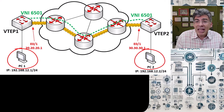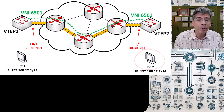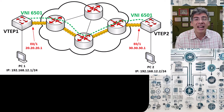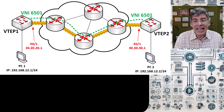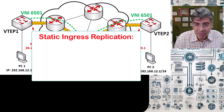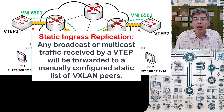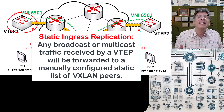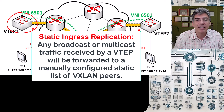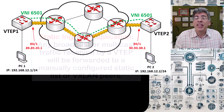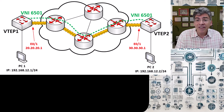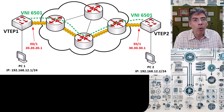Now remember, in previous videos we mentioned that it is possible to use various technologies for the control plane of VXLAN. These technologies help one VTEP find the other VTEP to which our destination device is connected. In our configuration today we'll create what is known as static ingress replication. What this essentially means is that any broadcast or multicast traffic that reaches a VTEP will be sent only to a statically configured list of other VTEPs within the same VXLAN segment. Thus any ARP requests received by one VTEP will be sent only to those VTEPs in our statically configured list. We're going to configure this list, but in our case our list will only have one entry.